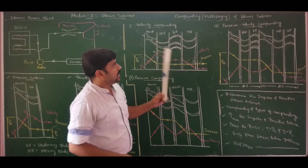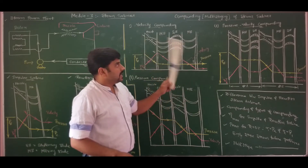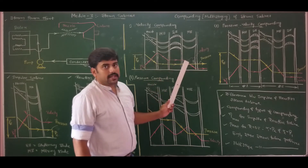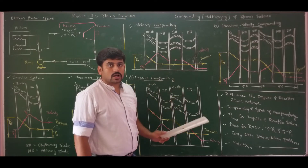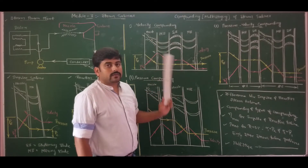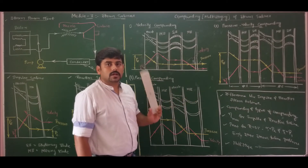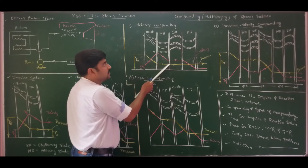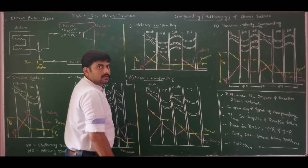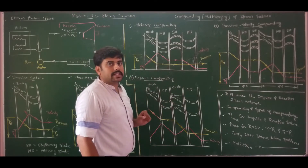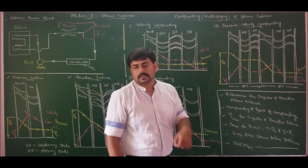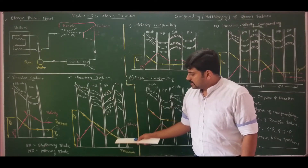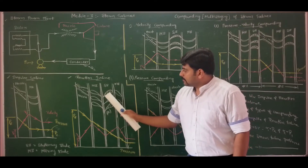To summarize pressure-velocity compounding: the arrangement is nozzle, moving blades, stationary blades, then again nozzle, moving blades, stationary blades. With symmetric blades in the moving rows, velocity decreases and pressure remains constant. In stationary blades, both velocity and pressure remain constant. Only when you have a nozzle or airfoil-shaped blading arrangement do you observe increasing velocity and decreasing pressure. Airfoil-shaped stationary blades act as nozzles, while airfoil-shaped moving blades show both pressure drop and velocity change.